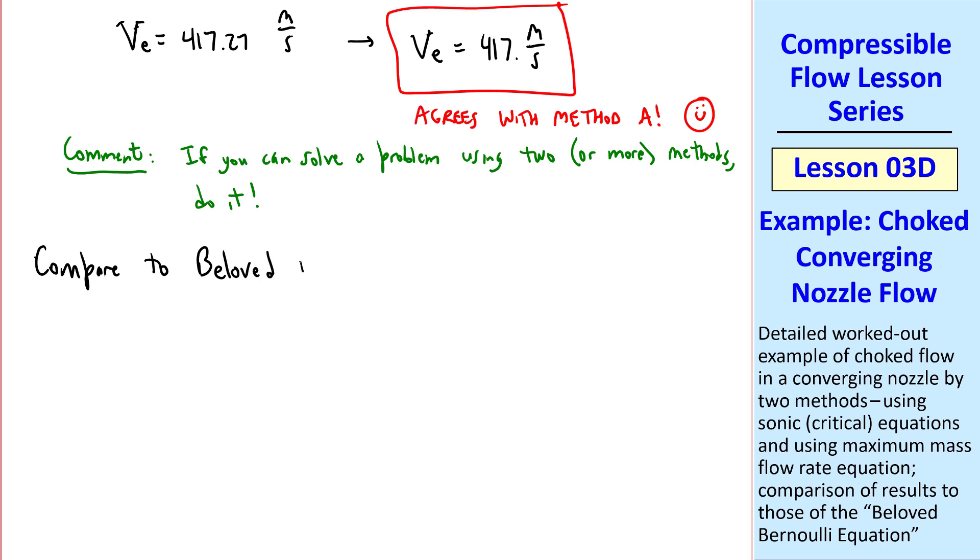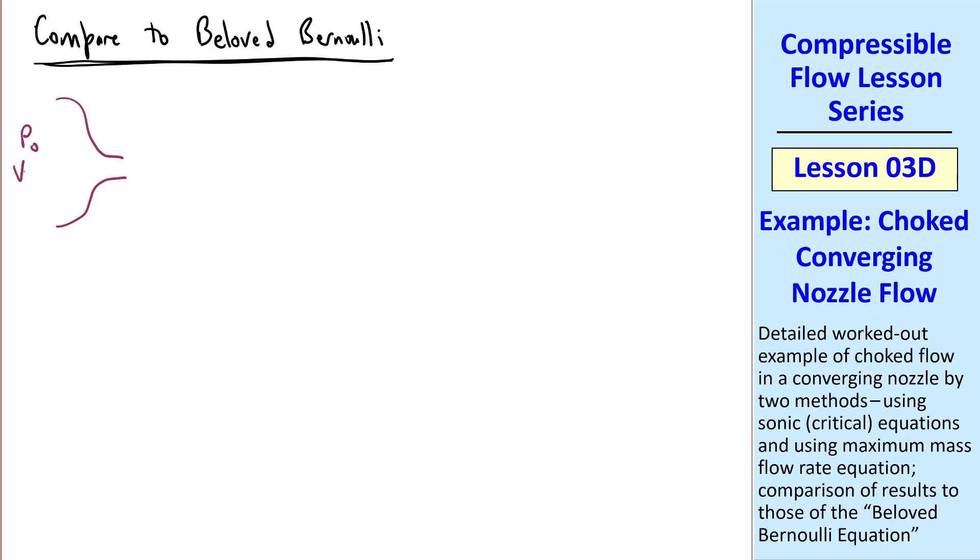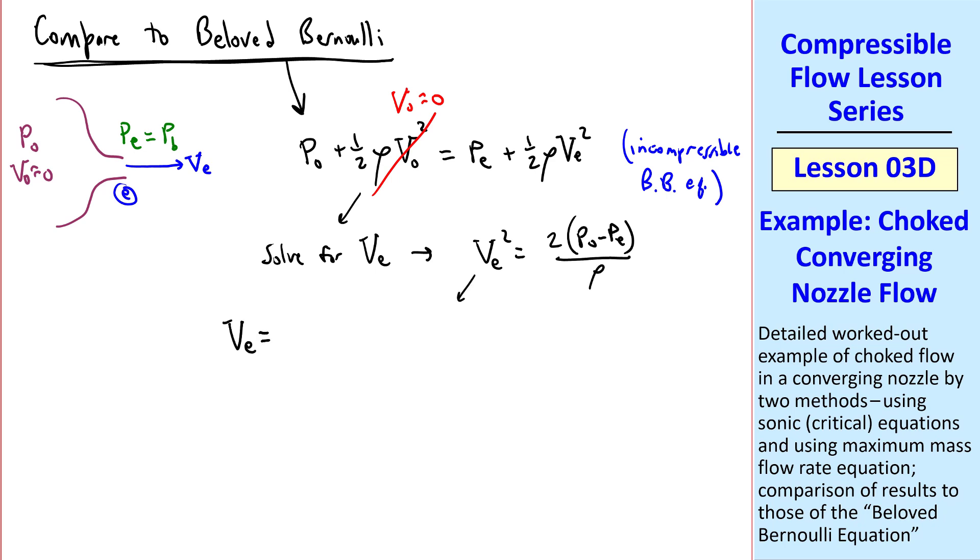Now let's compare our results if we use the beloved Bernoulli equation. We have P0 in the stagnation tank, where the speed is essentially zero, and VE at the exit plane with pressure PE, which we'll set equal to the back pressure PB. And the beloved Bernoulli equation, without gravity, we'll write as P0 plus 1 half rho V0 squared in the tank equal PE plus 1 half rho VE squared at the exit plane. This of course is the incompressible beloved Bernoulli equation that everyone likes to use, and that you typically learn in your first fluid mechanics class. Well, we can simplify because V0 is zero in the tank. And then we can solve for VE. VE squared turns out to be 2 P0 minus PE over rho, or VE equal the square root of 2 P0 minus PE over rho. This is our answer in variables from the incompressible beloved Bernoulli equation.